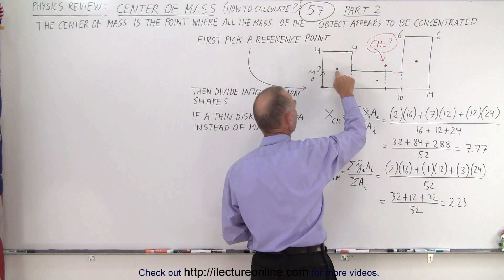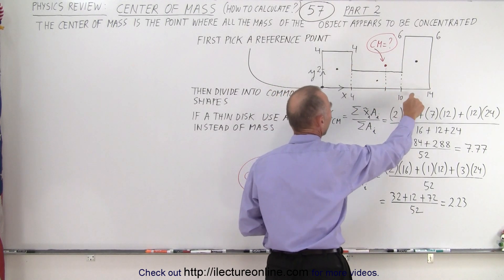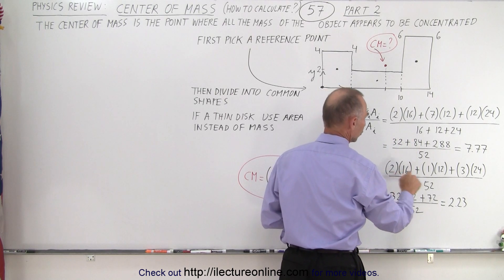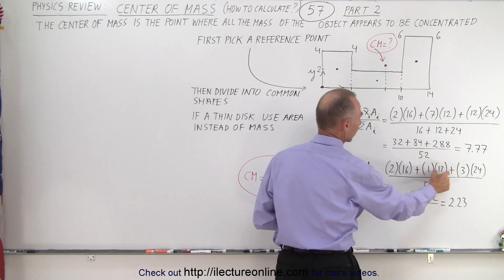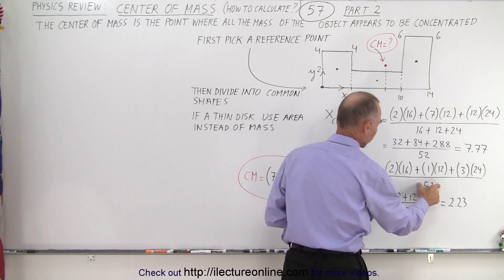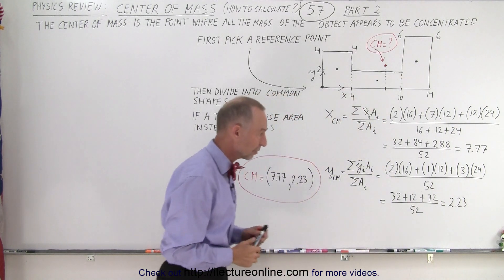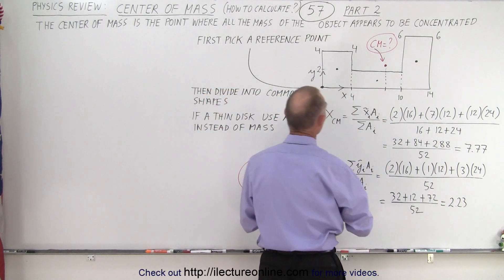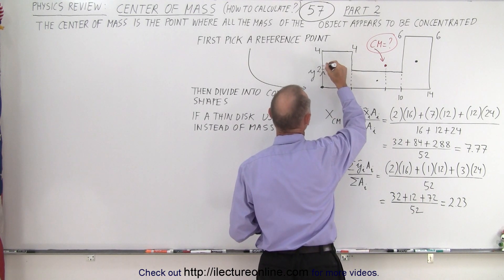So it would be halfway up would be 2. Halfway up would be 1. Halfway up to 6 would be 3. So you have 2, 1, and 3. The same areas. The areas haven't changed. The total sum of all the areas is still 52. Use your calculator. You get 2.23 which puts the center of mass in the y-direction along this line somewhere.